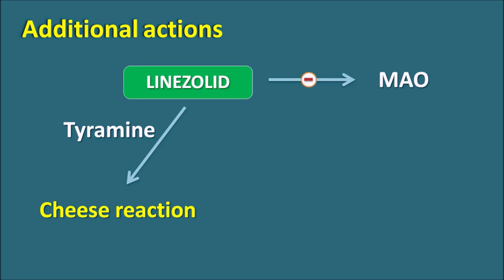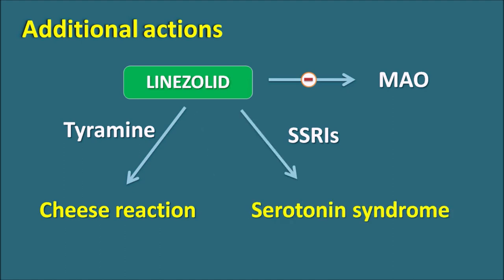Similarly, Linezolid can interact with SSRIs (selective serotonin reuptake inhibitors). When SSRIs are given with Linezolid, they can produce serotonin syndrome. SSRIs increase monoamine levels, and Linezolid by inhibiting MAO also increases monoamine levels. The combined effect can produce serotonin syndrome in patients.